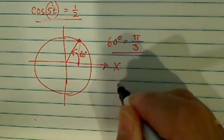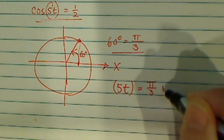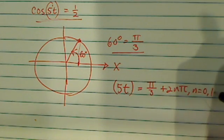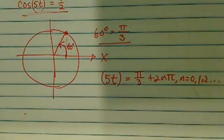Okay, so from there, we're going to say 5t as the variable is equal to pi over 3 plus 2n pi, where n is equal to 0, 1, 2, and so on and so forth.